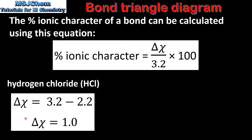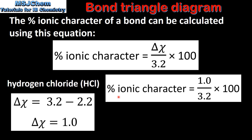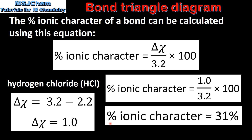As we saw earlier, the difference in electronegativity between the two atoms is 1.0. So the percentage ionic character is equal to 1.0 divided by 3.2 multiplied by 100, which gives us a percentage ionic character of 31%. So the bond in hydrogen chloride is 31% ionic and 69% covalent.